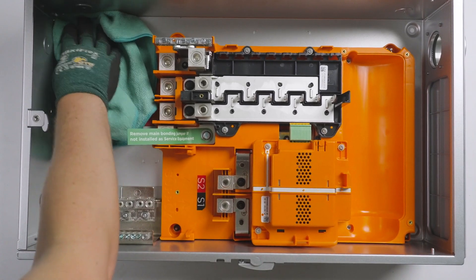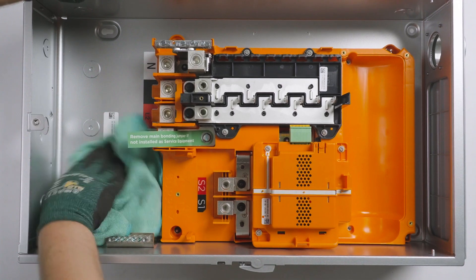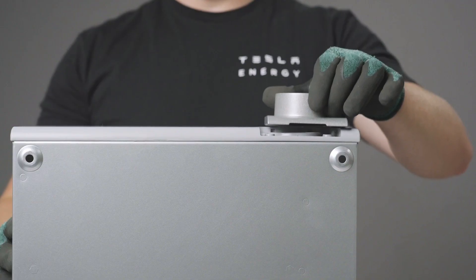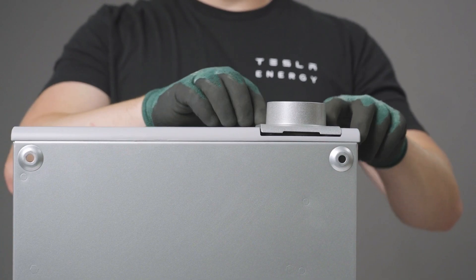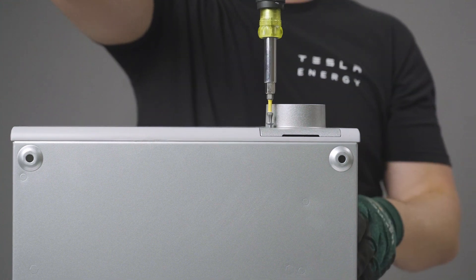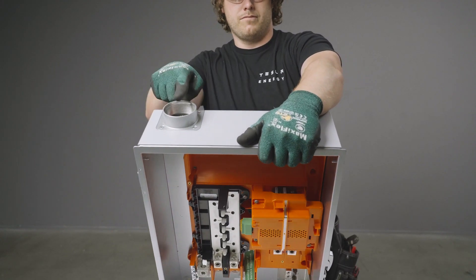Be sure to clean out any metal shavings left behind from drilling into the enclosure. Conduit may only enter the top of the enclosure when using this Tesla-provided conduit hub, available in two different sizes.